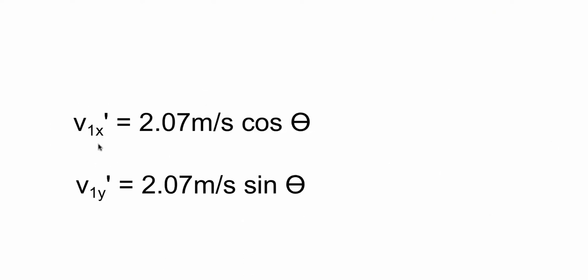Okay, now if we try to find the components for ball one, we don't actually have an angle. So we have 2.07 meters per second times the cos of an angle, 2.07 meters per second times the sine of an angle, but we don't have enough information to solve those, so let's just leave them.